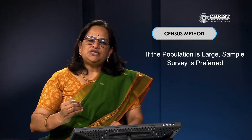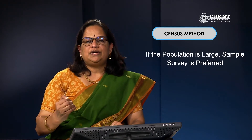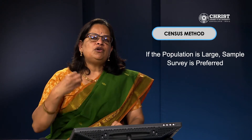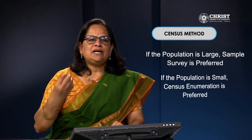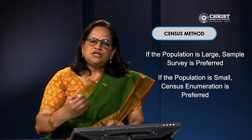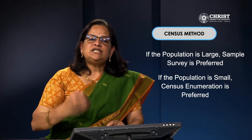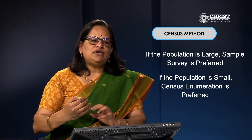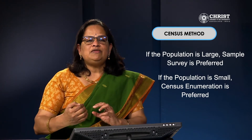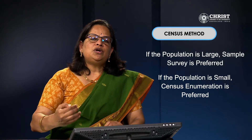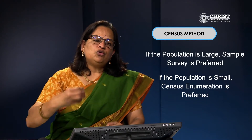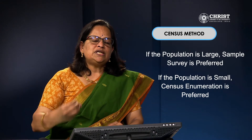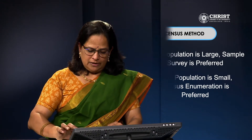If the population is large, sample survey is preferred — as in manufacturing companies, which always prefer sample survey. If the population is small, census enumeration is preferred. Because when the population is small, you can cover everyone and collect the information, so census enumeration is preferred.